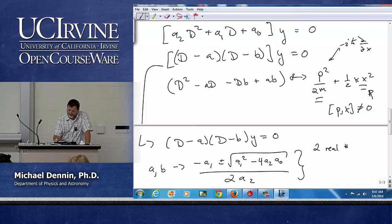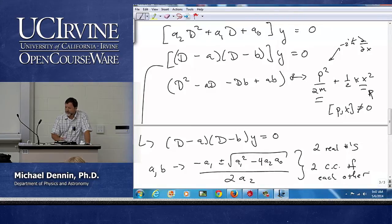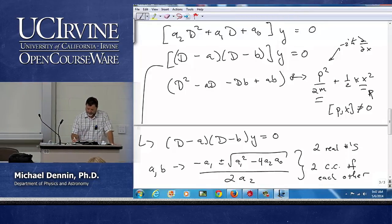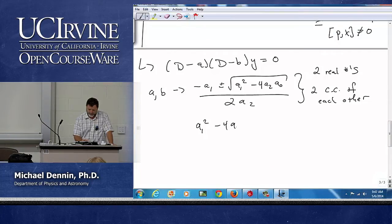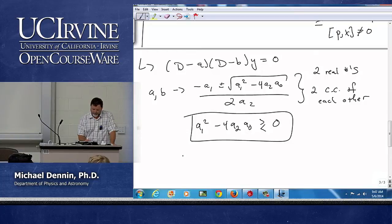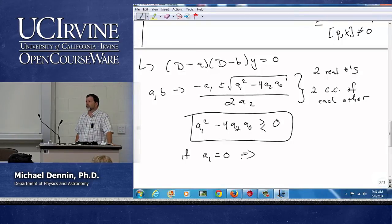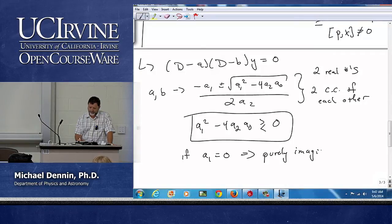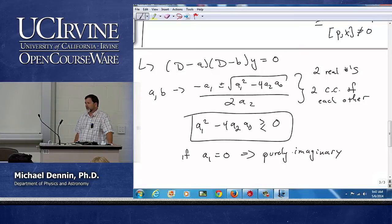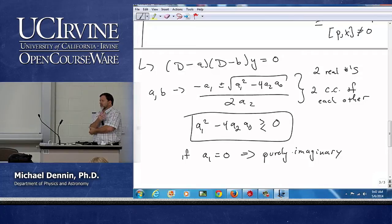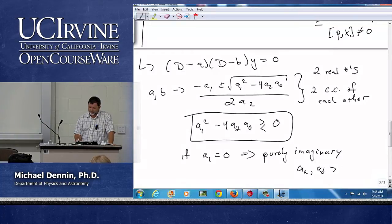Now, one thing to notice. They are either two real numbers or they're two complex conjugates of each other. Right? The solutions don't have to be real. The controlling factor in all of this is whether or not A1 squared minus 4A2A0 is greater than or less than zero. That controls a lot of the behavior. Of course, if A1 equals zero, then what do we have? What type of number? Purely imaginary. Now, I'm doing all of this, of course, under the assumption that my coefficients are positive. Right? If A2 and A0 happen, one of them happens to be negative and one happens to be positive, we're in trouble. Well, it changes the behavior. But, in general, A2, A0 for physical situations will be positive.